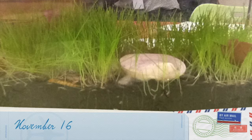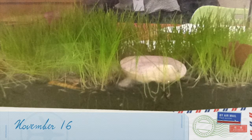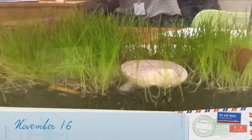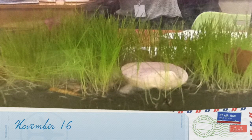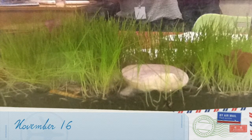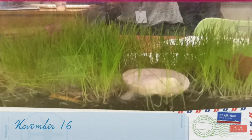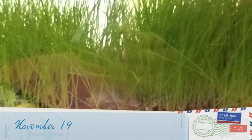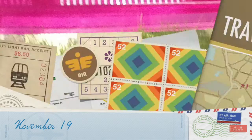November 16th: our grass is about three inches tall. All of our mealworms are in one corner and all of our crickets are alive. Our grass is a little bit taller than an inch. One of our crickets died but all of our mealworms are fine.